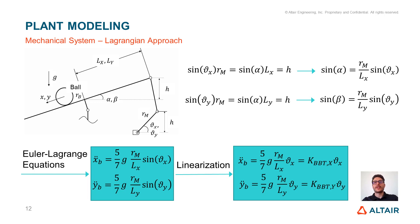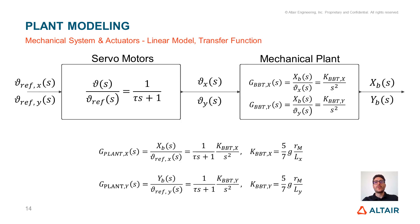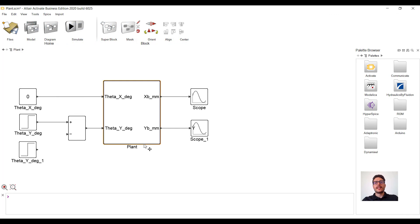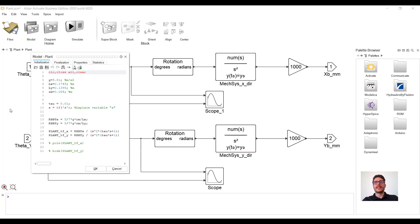Why should we use linear equations, which are an approximation, instead of the non-linear ones? The first reason is that leveraging the Laplace transform we can turn them into transfer functions, which are easier to handle since they are algebraic equations. This means we can easily derive a mathematical model for the whole plant that we can use to check stability, design the PID controller, and investigate the frequency response. For our plant we can derive the transfer functions by multiplying together those of the actuators and the mechanical system. We can see it is made up of two independent third-order systems that we can easily model in Activate. In this block diagram we can visualize the transfer functions of the actuators and of the mechanical system, with all parameters defined in the initialization tab.